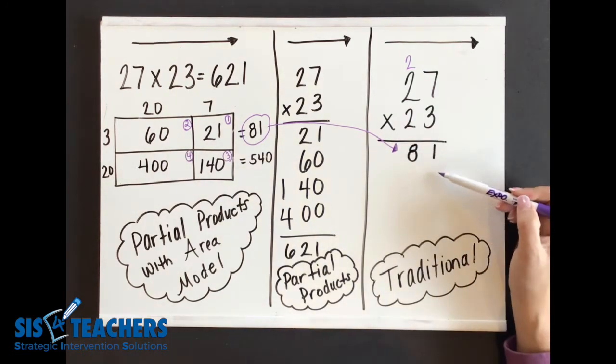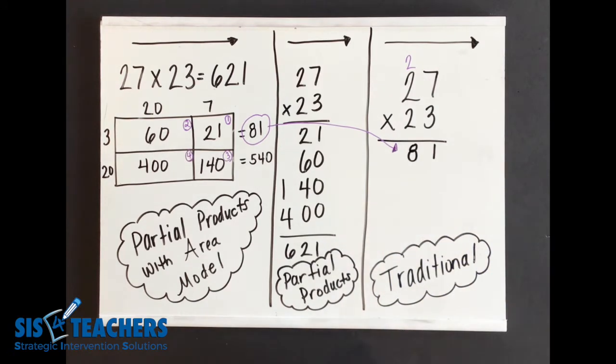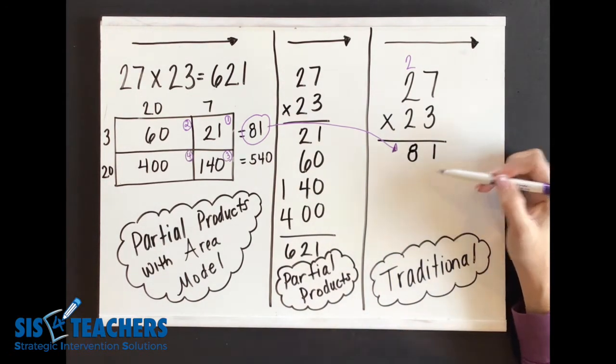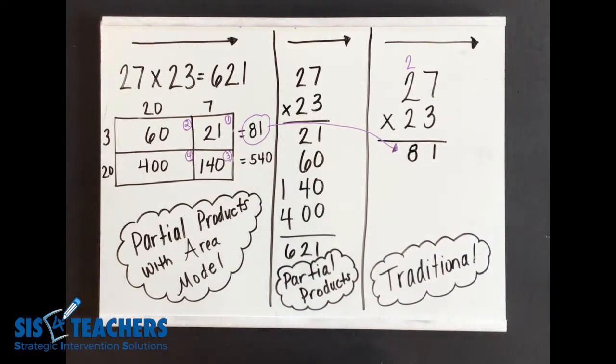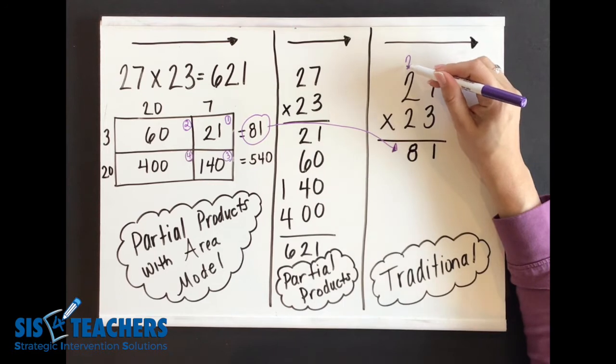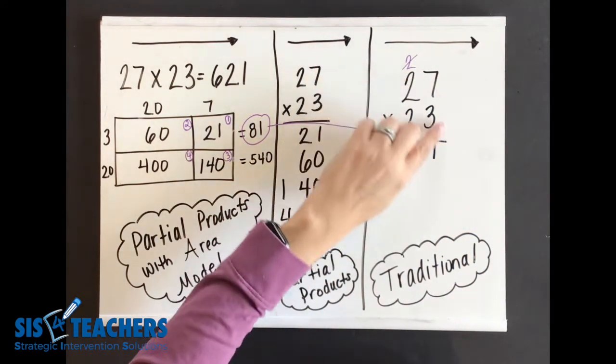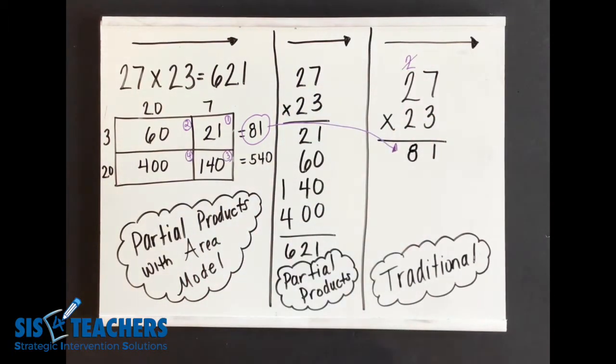Now sometimes you might be told to put a placeholder in here. Eventually when you're ready for that process, you can do that. I don't want you to put the zero there just because, but to understand why that is. I'm going to cross this off because I've already used that 20 in what I was doing here so I don't get confused.